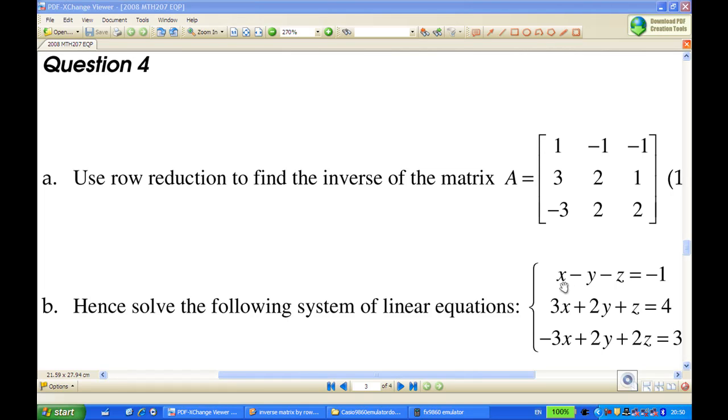We're going to solve the equation x minus y minus z equals minus 1, 3x plus 2y plus z equals 4, minus 3x plus 2y plus 2z equals 3. And actually, this question is related to part A where you find the inverse of the matrix 1 minus 1 minus 1, 3, 2, 1, minus 3, 2, 2.